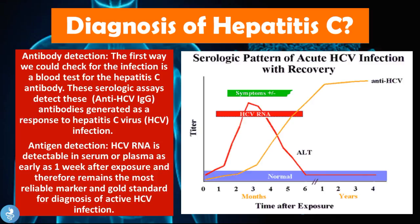We can also do antibody detection for the diagnosis of Hepatitis C. A blood test for the Hepatitis C antibody uses serological assays to detect anti-HCV IgG antibodies generated in response to HCV infection. Looking at the yellow line on the chart, after approximately three to four months from initial infection the anti-HCV antibody starts increasing and can help diagnose the virus. We can also test for HCV RNA, which is detectable in serum or plasma as early as one week after exposure and is the gold standard for diagnosing active HCV infection, remaining elevated for at least six months after exposure.